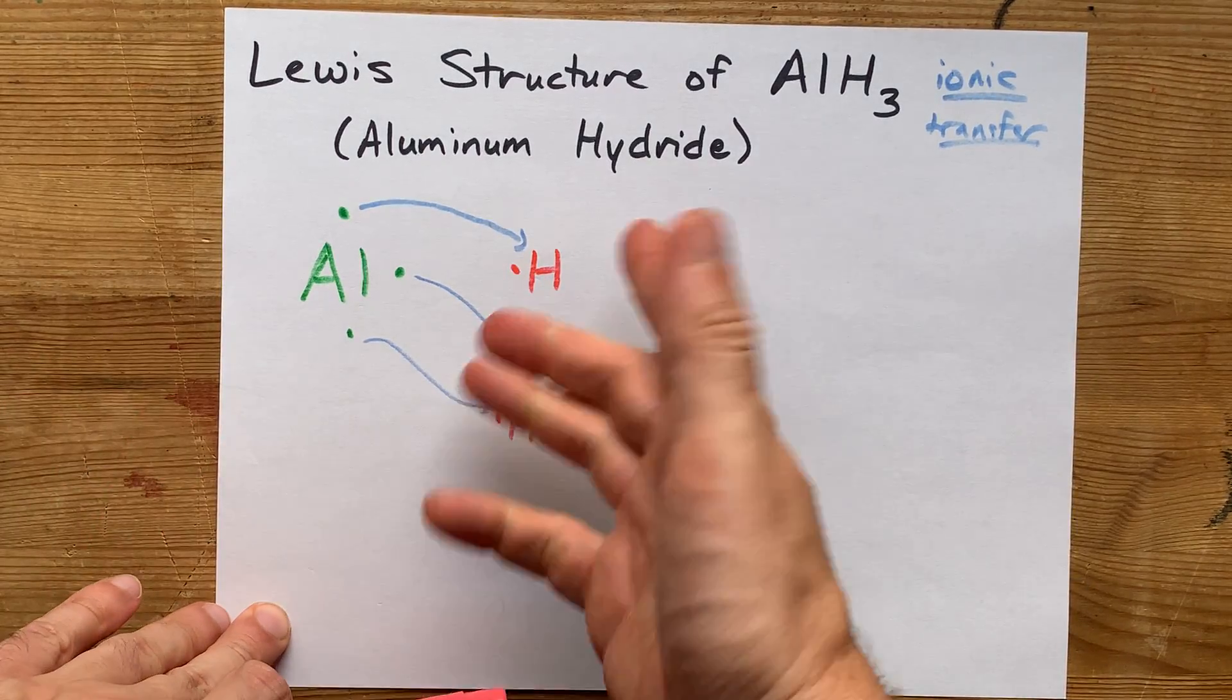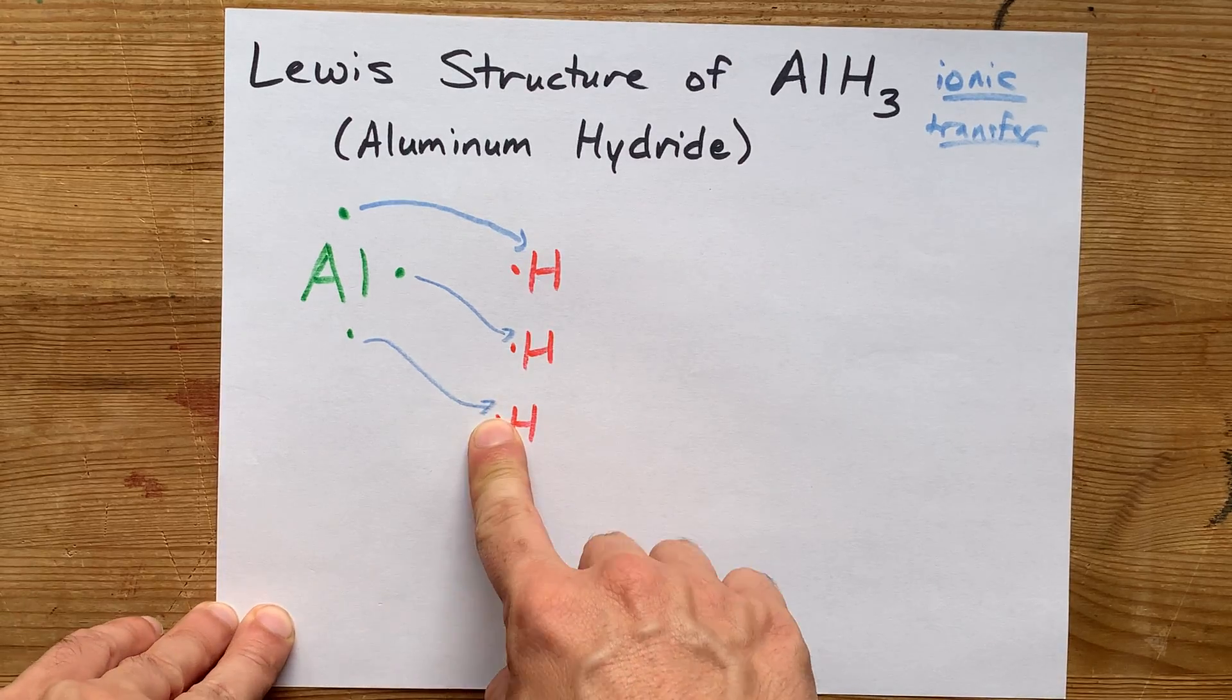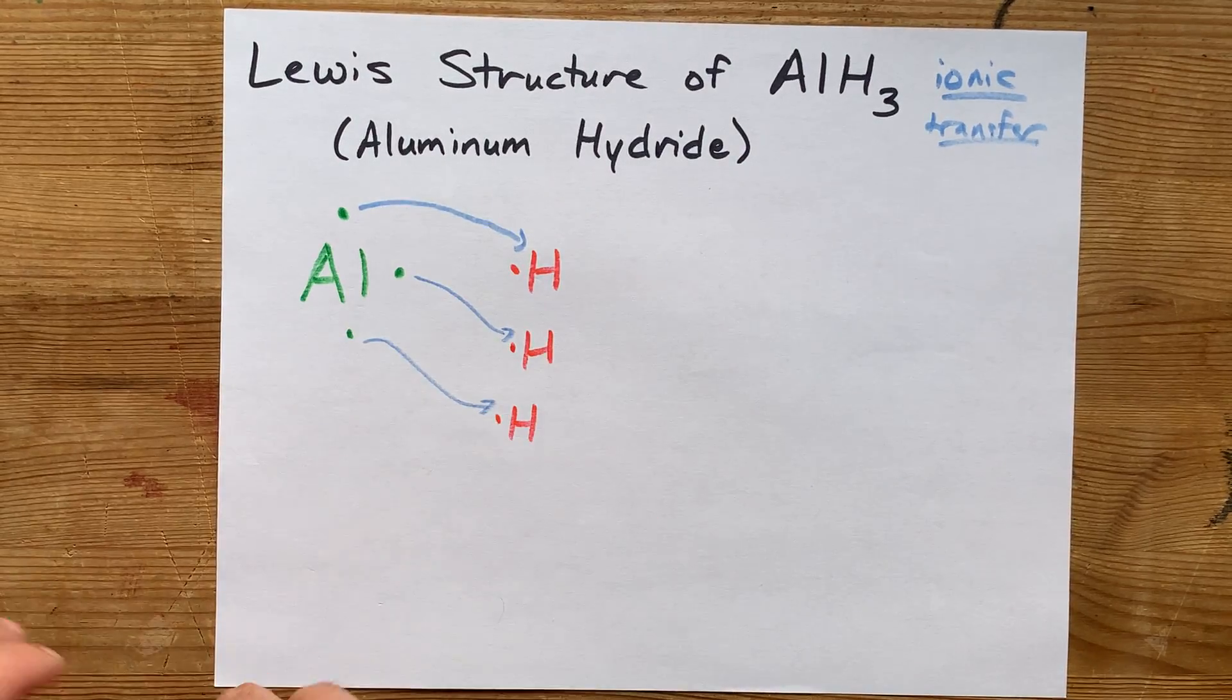This is why the formula is AlH3. You need three hydrogens in order to absorb all of the electrons that aluminum is giving away.